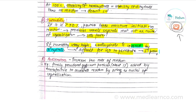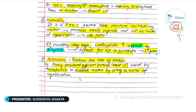Eighth factor is accelerators, which increase the rate of reaction. For example, finely powdered gypsum particles at about 1% — this dihydrate form is added by the manufacturer to accelerate the reaction by acting as nuclei of crystallization.